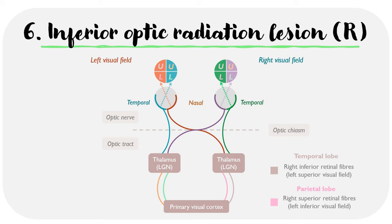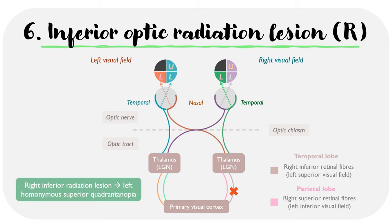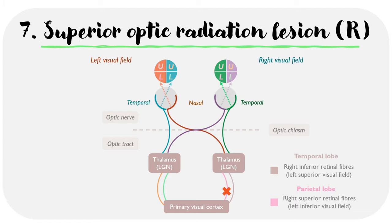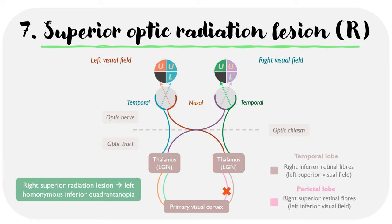A lesion in the right inferior retinal fibers affects the brown line, which connects to the red and green lines, contributing to the left visual field. Since it's an inferior retinal fiber, the upper left portions of both eyes are affected, resulting in a left homonymous superior quadrantanopia. A right-sided superior retinal fiber lesion leads to the loss of the lower left quadrants of both eyes — a left homonymous inferior quadrantanopia.